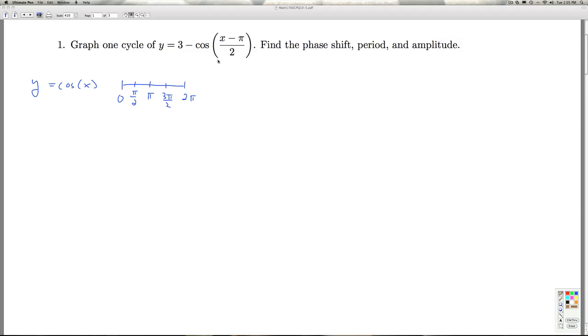So the strategy is we're going to set the argument of the cosine function, in other words what's inside the cosine function, equal to each of these points, and find out what the new x's are for the translated curve.